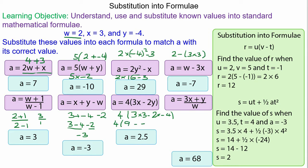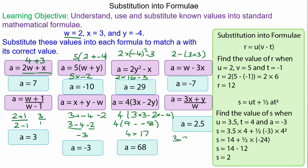(3x plus y) over w, which is (3 times 3 plus negative 4) over 2. 9 plus negative 4 is 5, divided by 2 is 2.5.